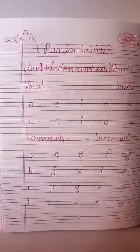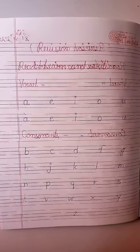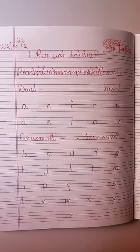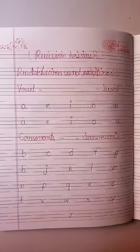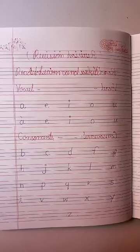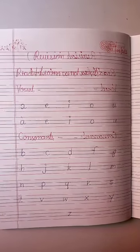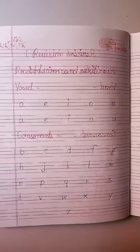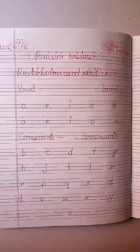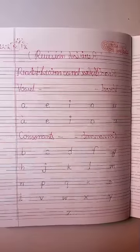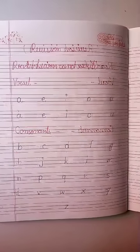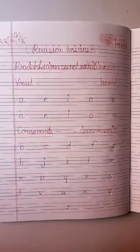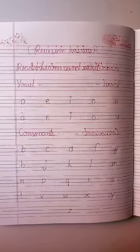Children, you will write vowels and consonants in your copy. Write both CW and HW in your copy. Your writing should be neat and clean. Sharpen your pencil and write neatly. So students, you will write this in your CW and HW copy and also learn it. Thank you.